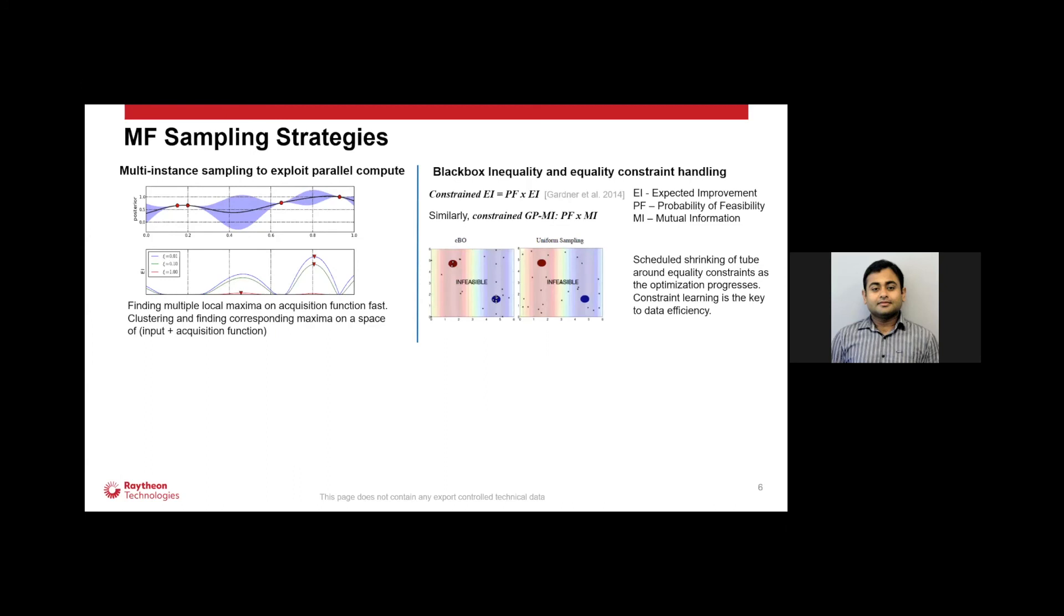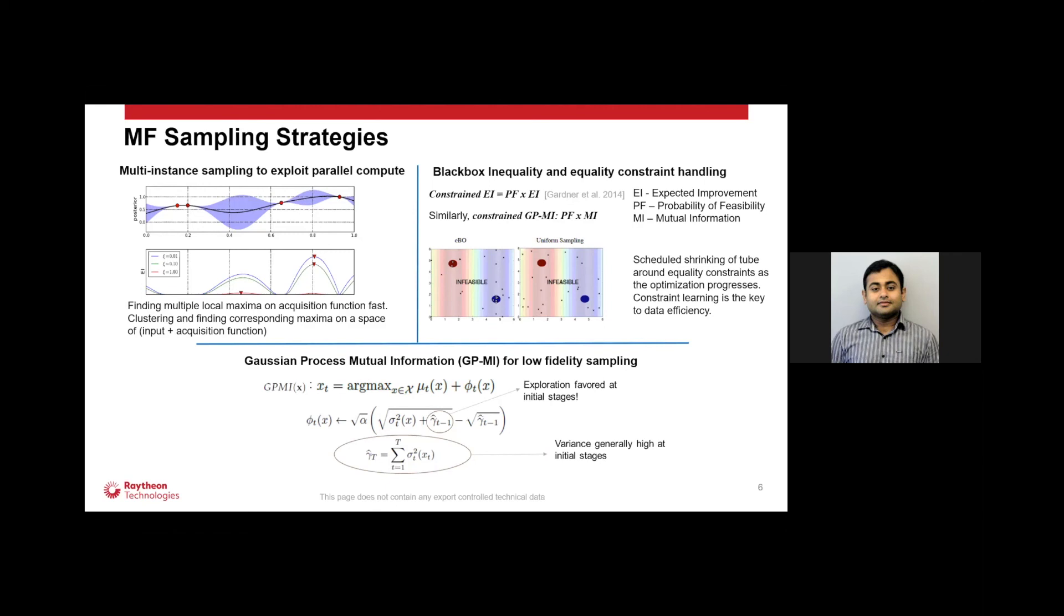We handle different constraint types like inequality and equality constraint by adding, multiplying this probability of feasibility into it, both for high fidelity and low fidelity. We handle equality constraint by creating this tube around the equality constraint and slowly shrinking it in a scheduled manner as we go forward in the optimization. Specifically for low fidelity sampling, we introduced this Gaussian process mutual information-based sampling, which favors exploration in the beginning, and as you hone in on the optimal points, it favors more exploitation.